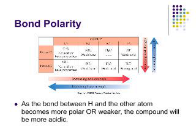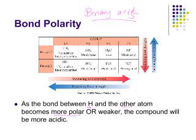We're going to start by talking about the binary acids. The main thing that affects the acid strength of the binary acids is the polarity of the bond between the hydrogen and the other atom in the acid. As the bond between the hydrogen and the other atom becomes more polar or weaker, it will be a more acidic compound.